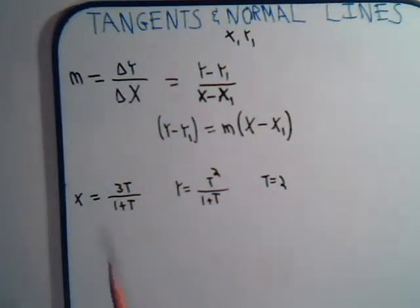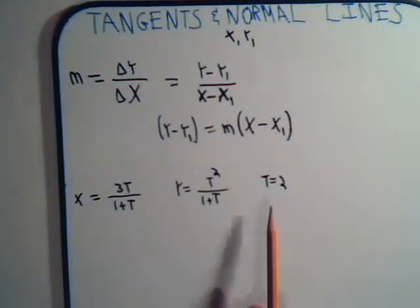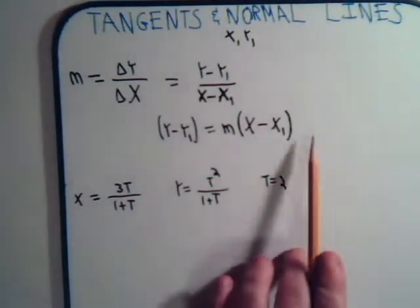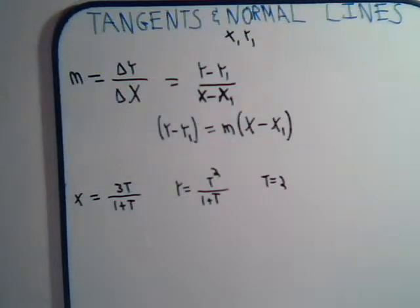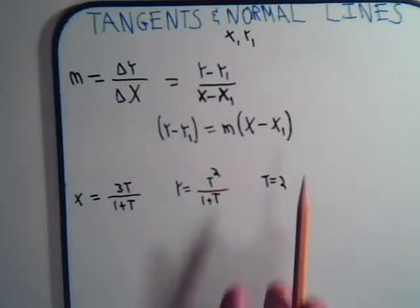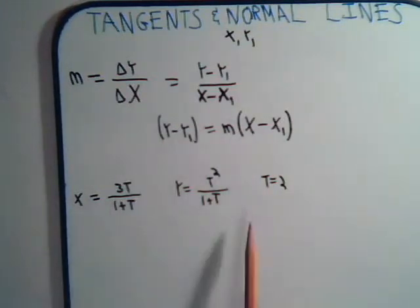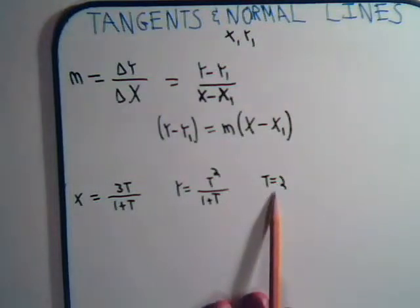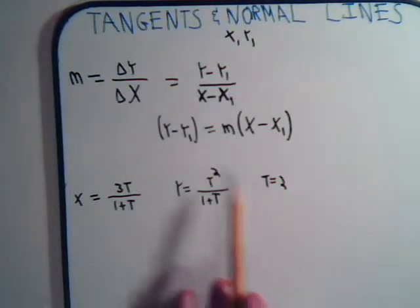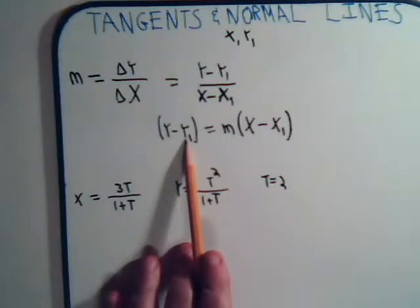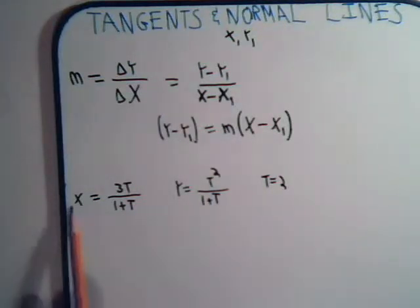Obviously for this curve, it's going to have a certain slope or derivative when t equals 2. Our tangent line has to have that same slope, and this will be the general formula for that tangent line. If we're going to use this, we have to know at t equals 2, what is x1 going to be, what is y1 going to be, and what is going to be the slope of the curve at that point?